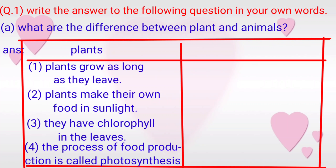Answer – Plants: 1. Plants grow as long as they live. 2. Plants make their own food in sunlight. 3. They have chlorophyll in the leaves. 4. The process of food production is called photosynthesis.